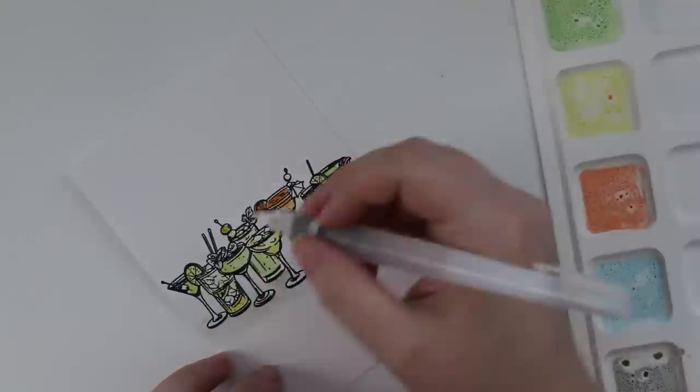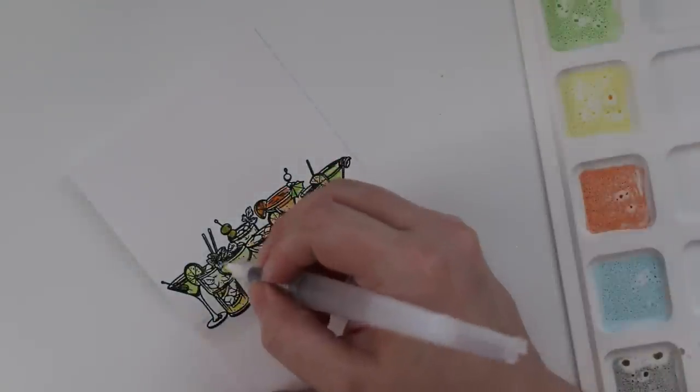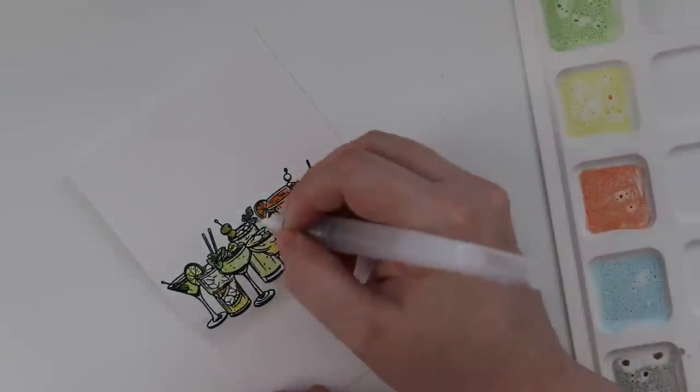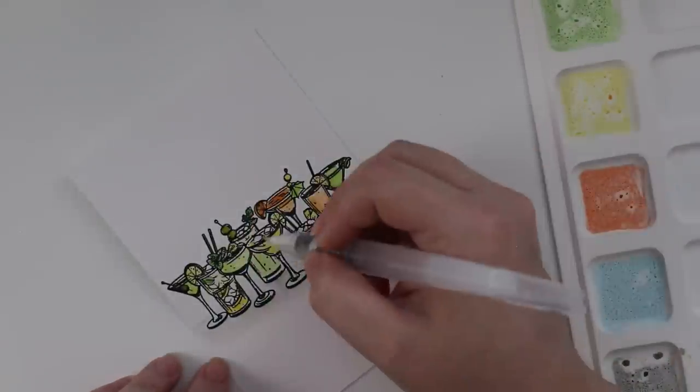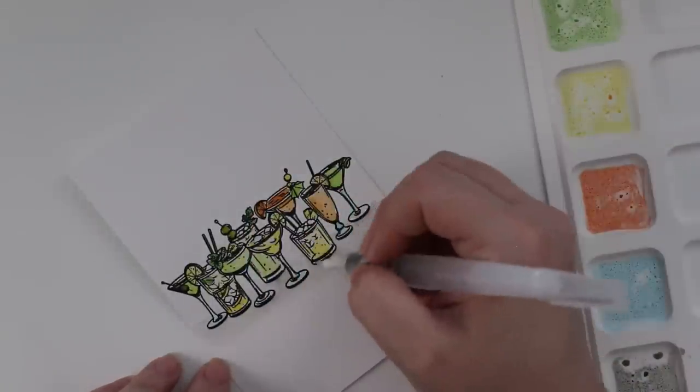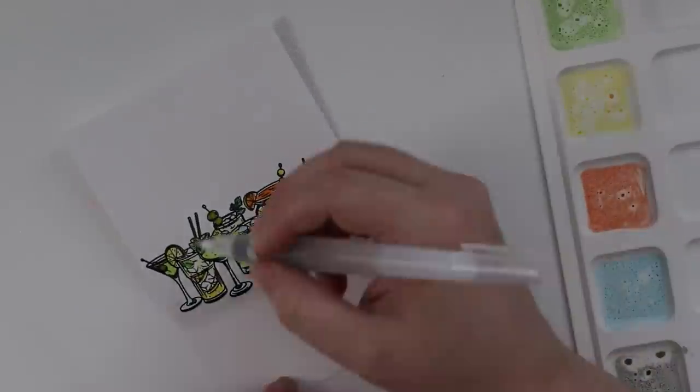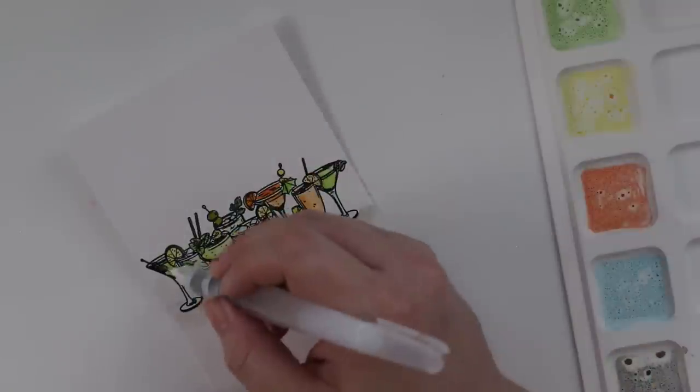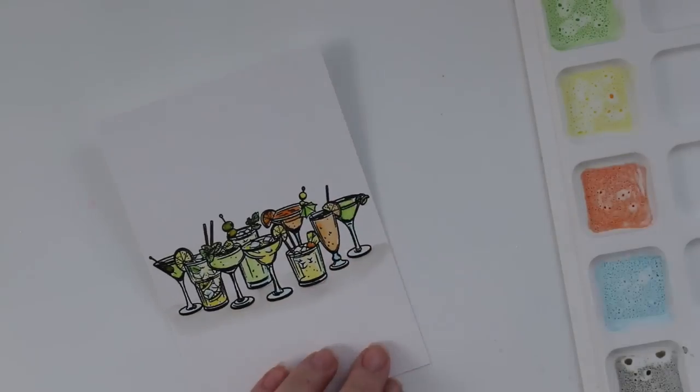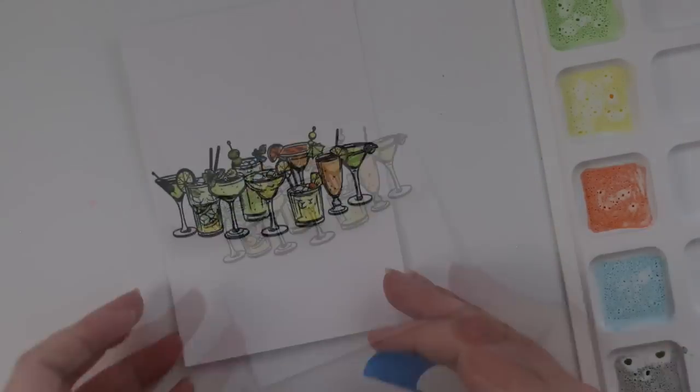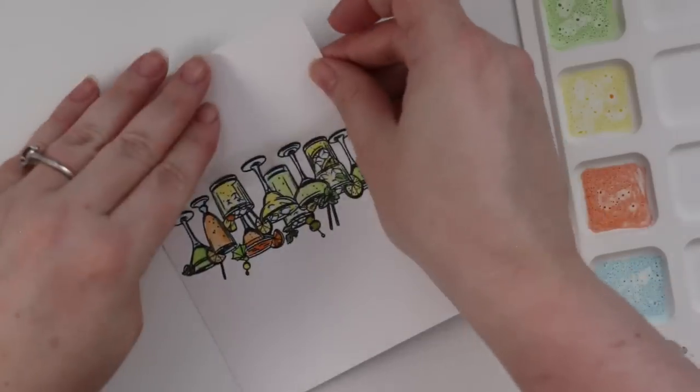As I started coloring it I was like this is actually a lot of fun. There's all these little details. I was using Twisted Citron as my main green, and then I had Squeezed Lemonade, a little bit of Carved Pumpkin because I was thinking like orange slices, Tumbled Glass for the glass areas just to give it that little extra something, and then Pumice Stone for the shadows on the bottom. Then I used a little bit of Mowed Lawn for the mint leaves and a bit of Crushed Olive because there's olives in some of those glasses. Really simple coloring, just fun.